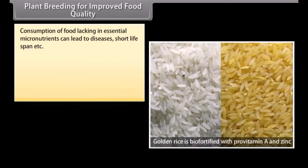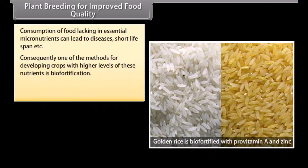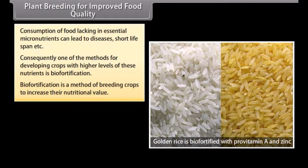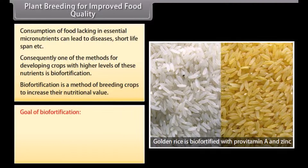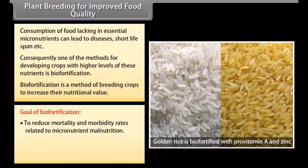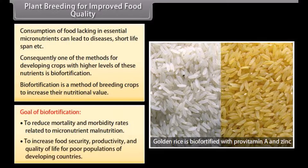Plant breeding for improved food quality: consumption of food lacking in essential micronutrients can lead to diseases and short lifespan. Consequently, one of the methods for developing crops with higher levels of these nutrients is biofortification. Biofortification is a method of breeding crops to increase their nutritional value. The goal of biofortification is to reduce mortality and morbidity rates related to micronutrient malnutrition, and to increase food security, productivity and quality of life for poor populations of developing countries.